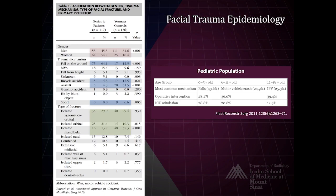In the pediatric population, there are three different peaks to consider. For the five-year-or-less population, falls are the most common mechanism, with about 28% requiring operative intervention. In the second half of the first decade, motor vehicle injury is most common with a greater incidence requiring operative intervention. In older children through the late teenage years, interpersonal violence predominates.